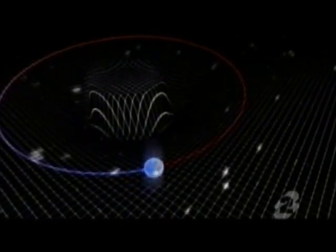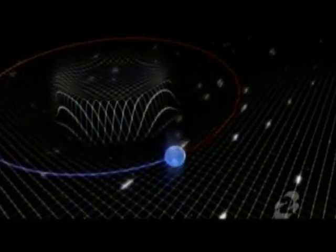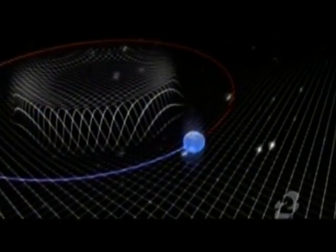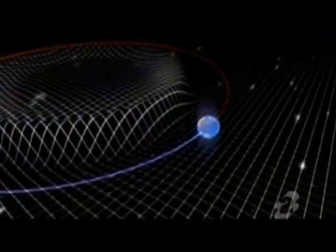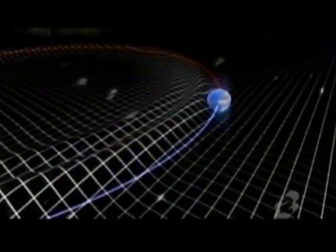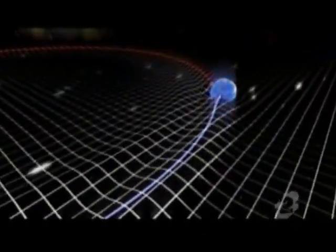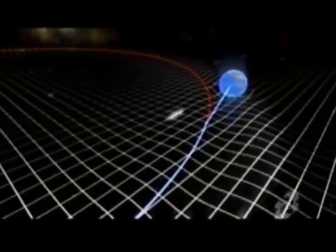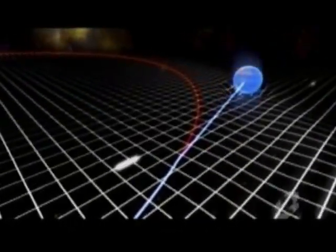The gravitational disturbance that results will form a wave that travels across the spatial fabric in much the same way that a pebble dropped into a pond makes ripples that travel across the surface of the water. So we wouldn't feel a change in our orbit around the Sun until this wave reached the Earth.